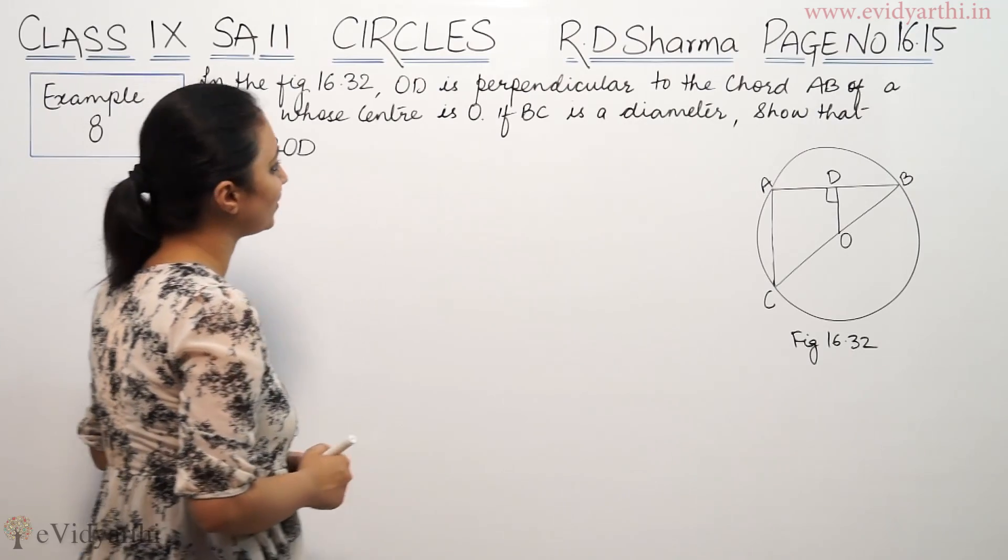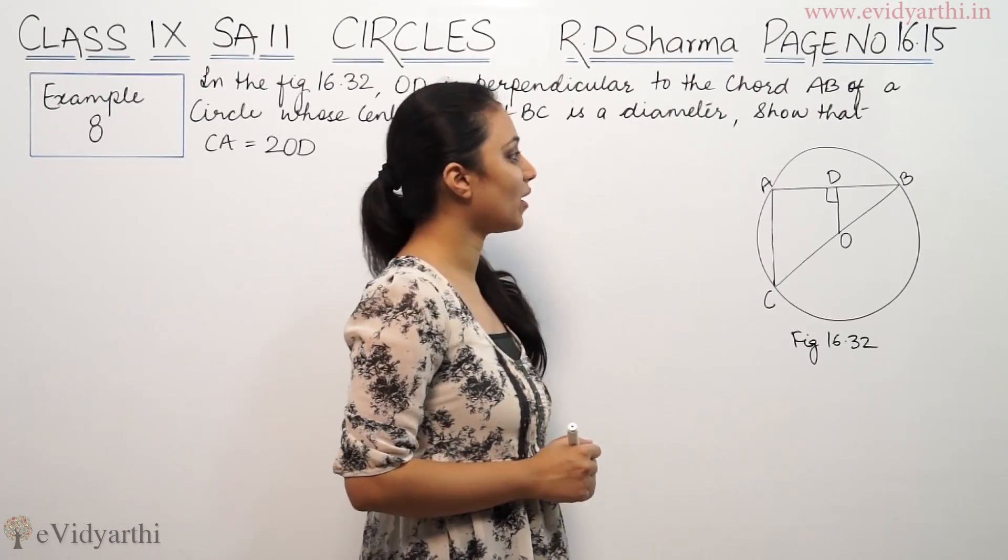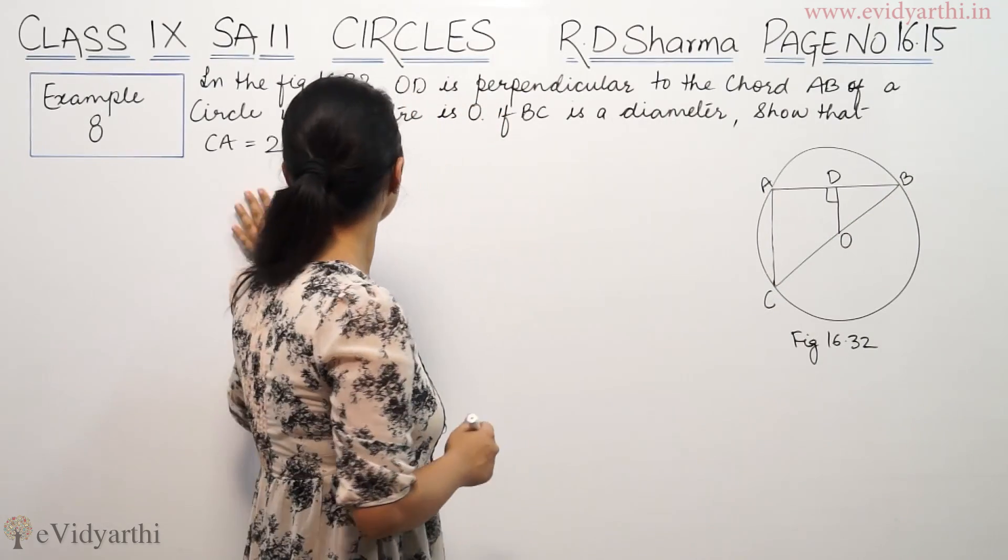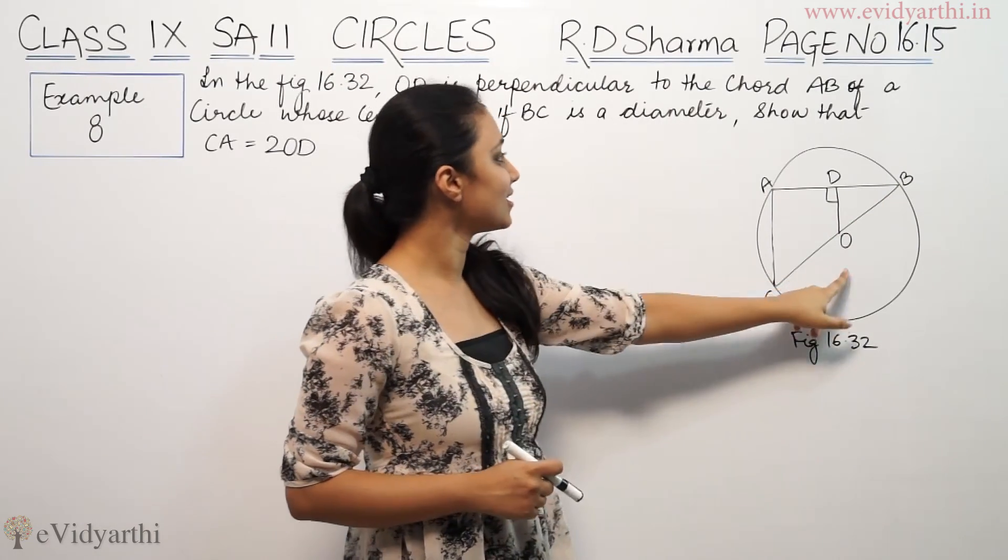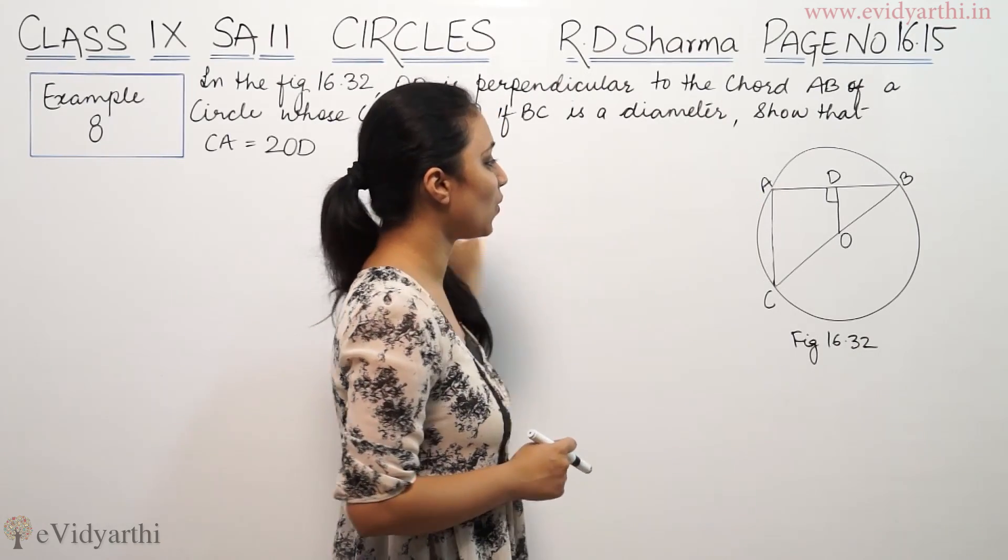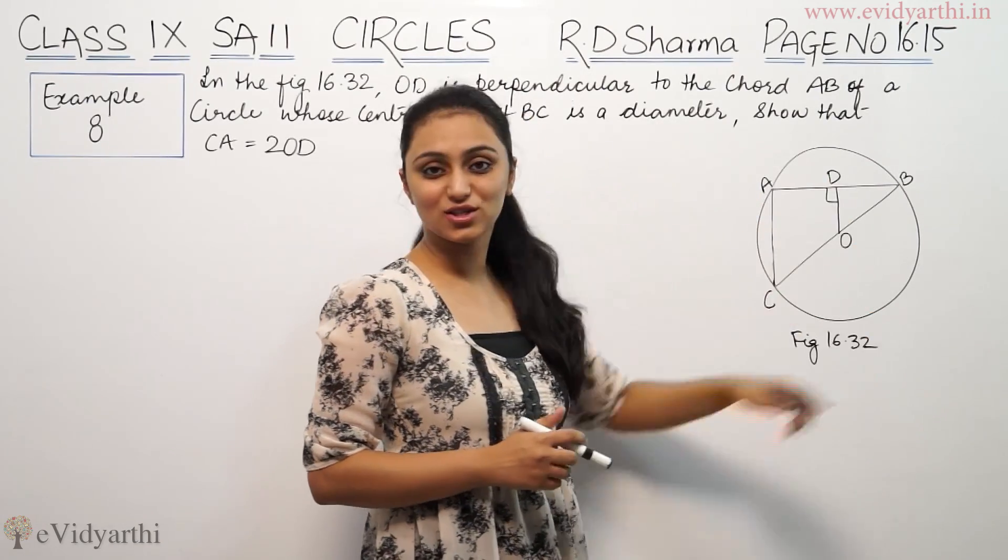This says in the figure 16.32, OD is perpendicular to chord AB of a circle whose center is O. BC is the diameter. Show that CA is equal to 2OD, CA is equal to twice of OD.